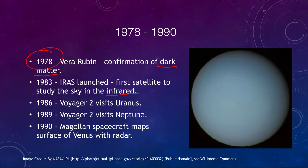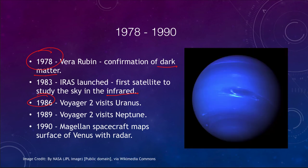In 1986, Voyager 2 visited Uranus for the first — and so far only — time, allowing us to see and study its rings up close. A couple of years later, Voyager 2 made its way to Neptune, studying it for the first and again the only time we have looked at Neptune up close, since we cannot see it in that kind of detail from Earth.